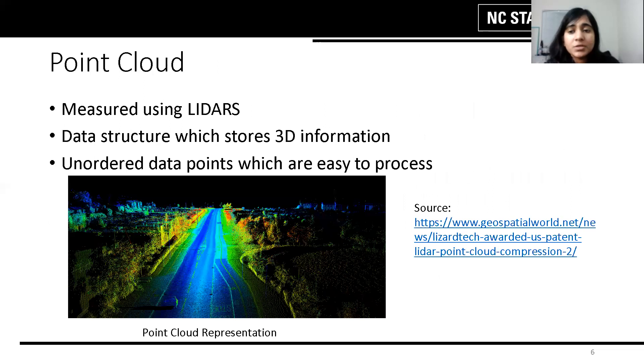In autonomous driving systems, the data is acquired using sensors called LIDARs which capture images in the form of point clouds. Point clouds are basically a set of unordered data points in space taken from the surface of objects which are also easy to process.